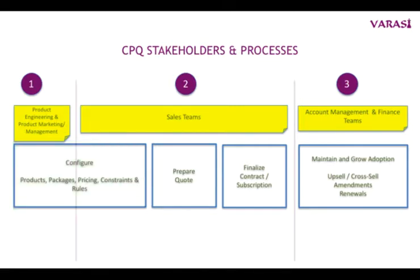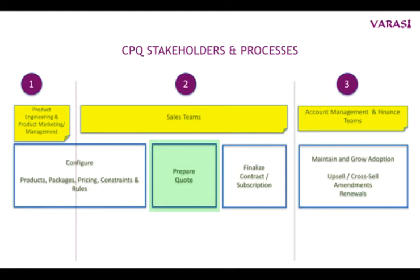All of this is used by the sales teams for configuring the product being sold, which is why you see the configure business process straddling between the product management and sales functions in this picture. The sales teams utilize CPQ for preparing quotes, syncing various versions of the quotes with opportunities, and keeping the pipeline and forecast reports current with the most current opportunity amount.